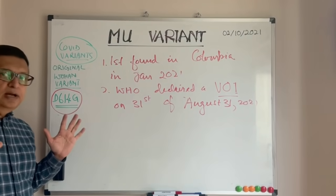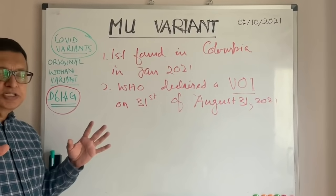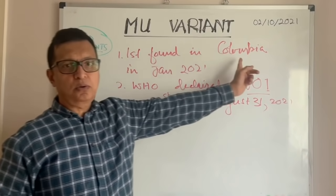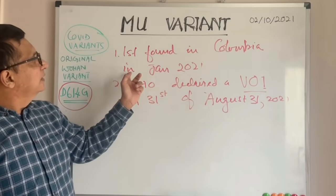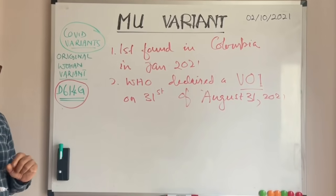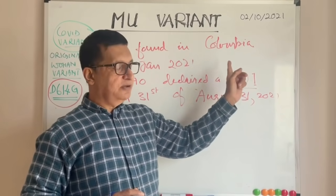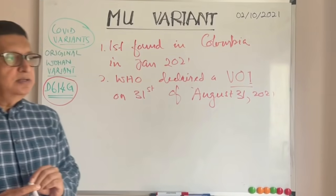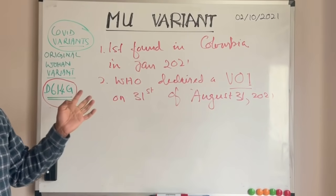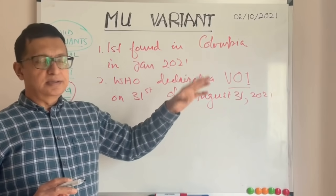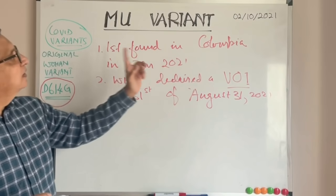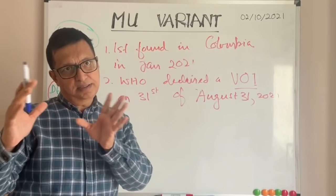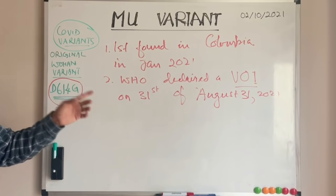Now that we have an understanding of the mu variant genome, let's see what influence it has had on the world. It was first found in Colombia in January 2021, and the WHO declared it a variant of interest on the 31st of August 2021. The Delta variant was found in late 2020 and by now has dominated the whole world, whereas mu was found in January 2021 — not much later.